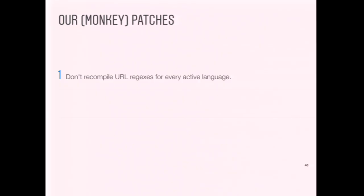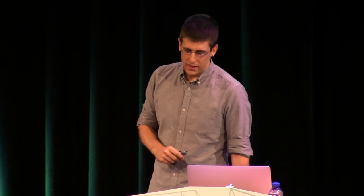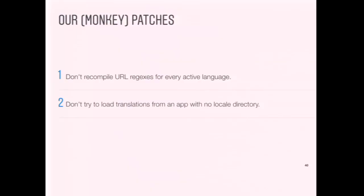Similarly, Django gained the ability to load translations from any installed app instead of just from one directory — a great feature for reusable apps. But for us, we don't keep any translations in our installed apps, and we have over 100 installed apps. The way it currently works, for every installed app — even if there's no locale directory — Django will ask gettext to load the translations, and gettext will create a null translations object and do a bunch of work for no reason. That was a problem for us, and again, I think it could be fixed in the sprints.